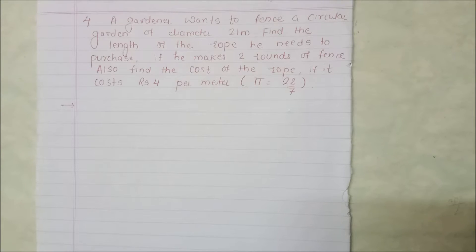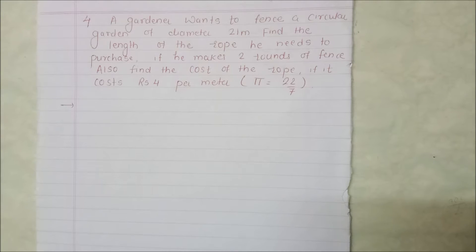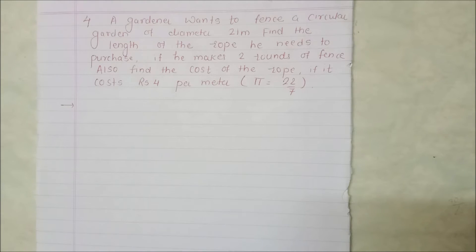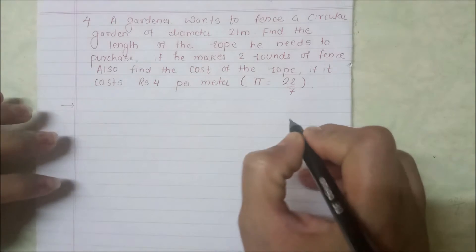Hello friends, welcome back to your channel Beginners Point. We will see Class 7 Maths Exercise 11.3, Question Number 4. The first question asks: a gardener wants to fence a circular garden of diameter 21 meters.